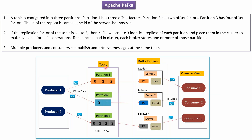Suppose the replication factor of this topic is set to 3. Then Kafka will create 3 identical replicas of each partition and place these replicas in the Kafka cluster, so that they will be available for all Kafka-related operations. Multiple producers and multiple consumers can publish and retrieve messages at the same time.